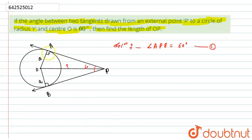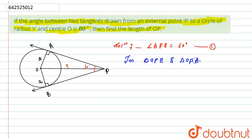Looking at the figure, we can see there are two triangles: triangle OAP and triangle OBP. Let us work with them. OA and OB are nothing but radii of the same circle, hence they are both equal: OA = OB = a.